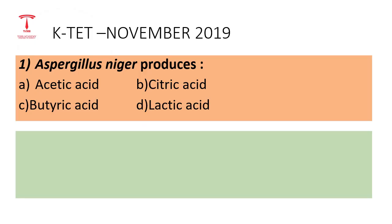First question: Aspergillus niger produces — which of the following? Options: A) Acetic Acid, B) Citric Acid, C) Butyric Acid, D) Lactic Acid.